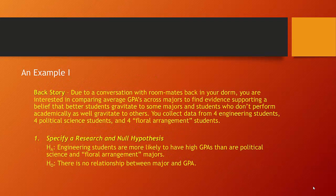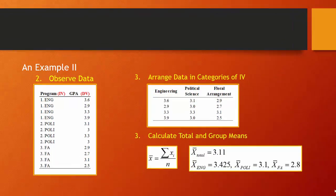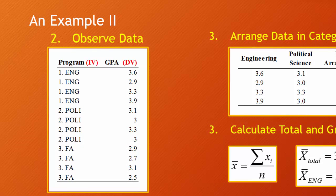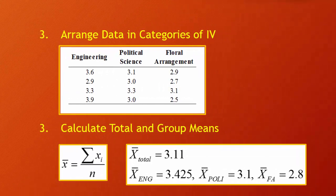Here's our example backstory: due to conversations with roommates in the dorm, you're interested in comparing average GPAs across majors to find evidence supporting the belief that better students gravitate to some majors and weaker students to others. You collect data from four engineering students, four political science students, and four floral arranging students. The research hypothesis is that engineering students are more likely to have high GPAs than political science and floral arranging majors. The null is that there's no relationship between major and GPA.